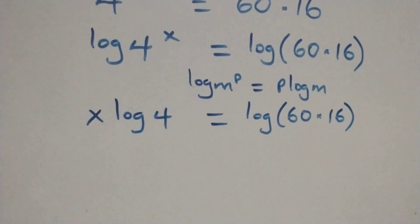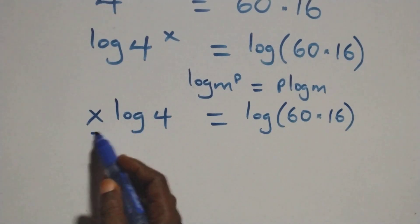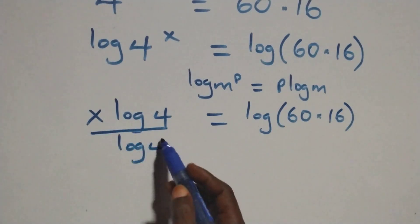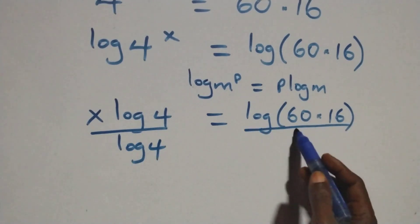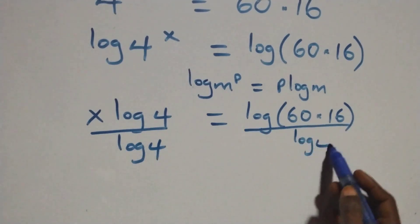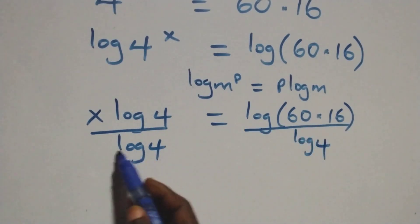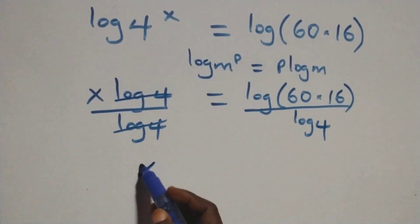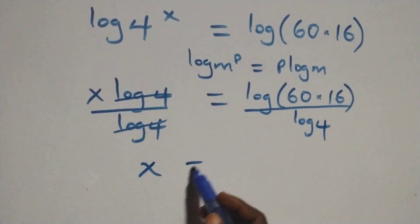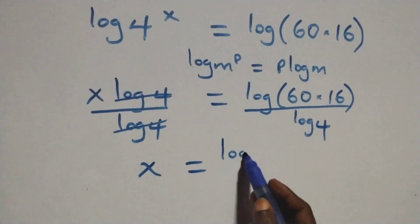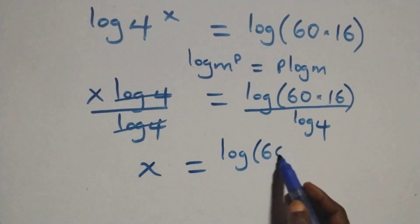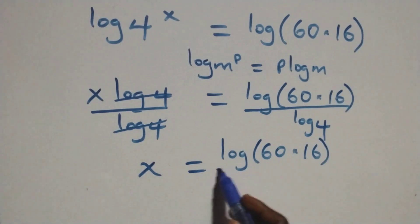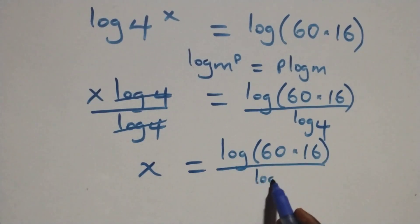In the next step, we divide both sides by log four. Log four cancels on the left, and we have x equals log of sixty times sixteen over log four.